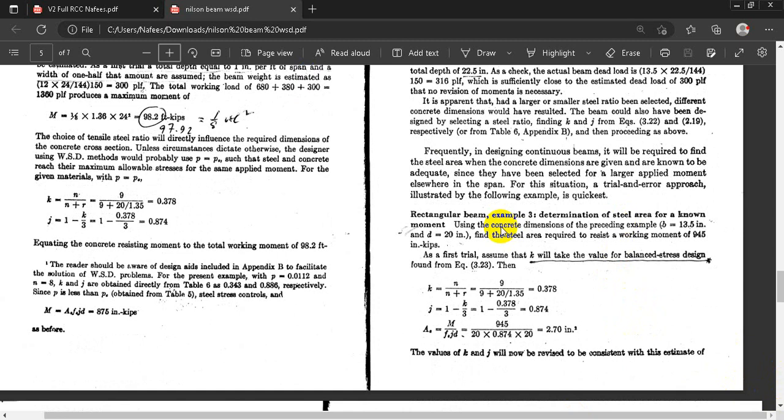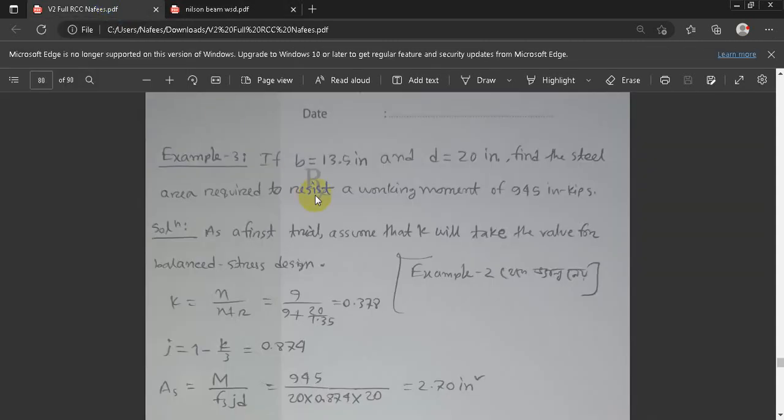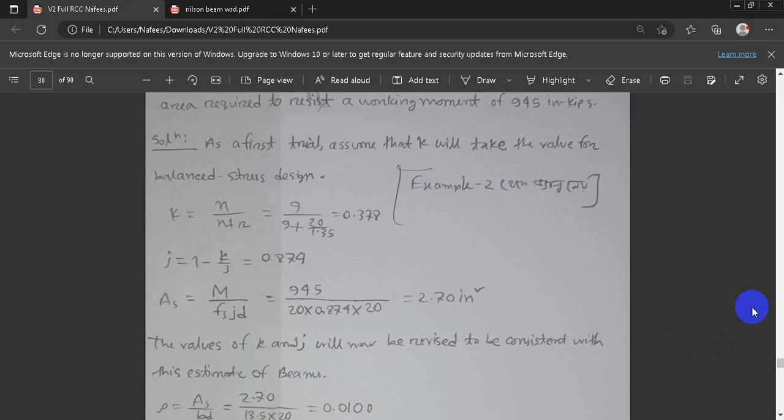The preceding example. I thought if B equals 13.5 and D equals 20, find the steel area required to resist a working moment of 945 inch-kips. B equals 13.5, D equals 20. The first trial assumes that K will take the value of balanced steel design. So K equals N divided by N plus R. So N is 9 divided by 9 plus R, where R is 20 by 1.35. So K is 0.378.